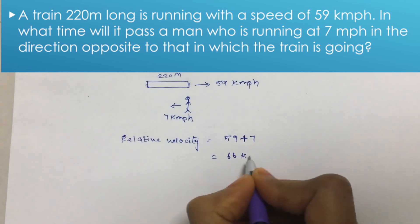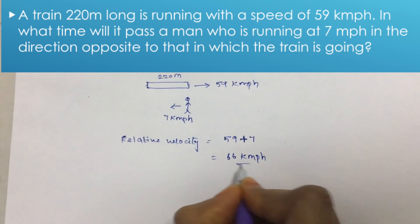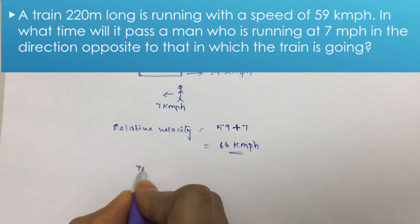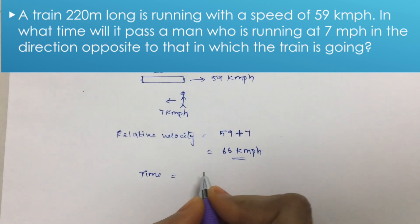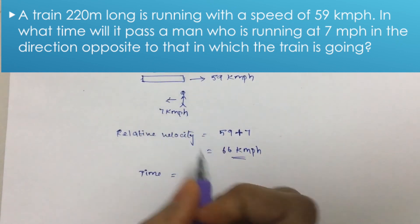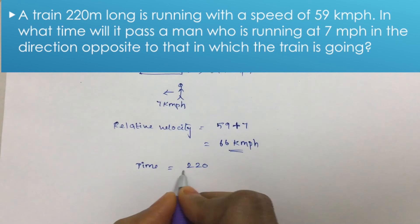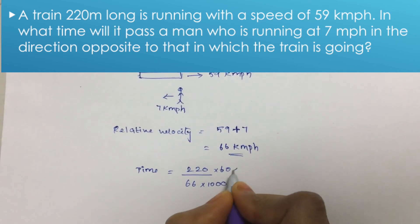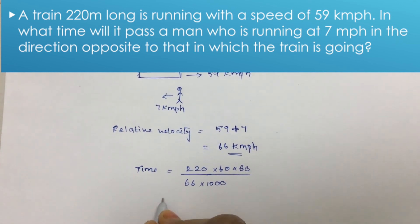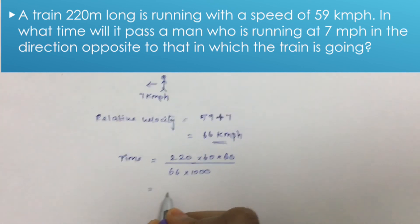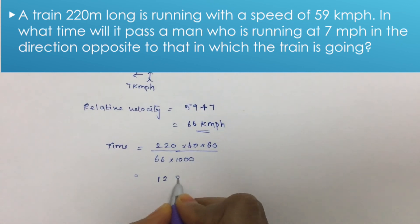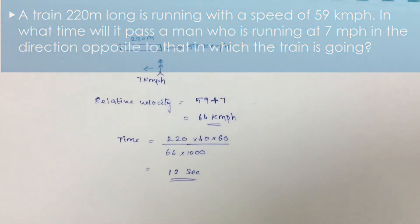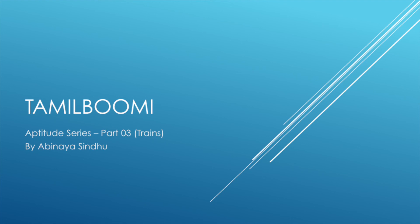So the relative speed is 66 kmph. Time equals distance by speed, so distance is 220 meters divided by 66 km per hour after conversion, giving 12 seconds. If you like this video, please like and share with your friends. If you have any doubts, please comment. Thank you.